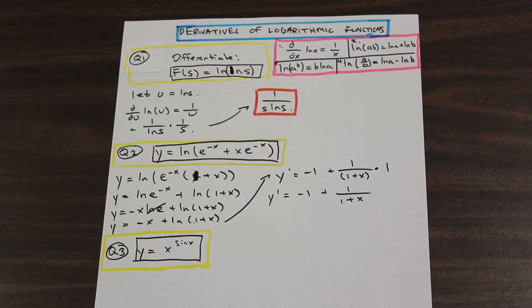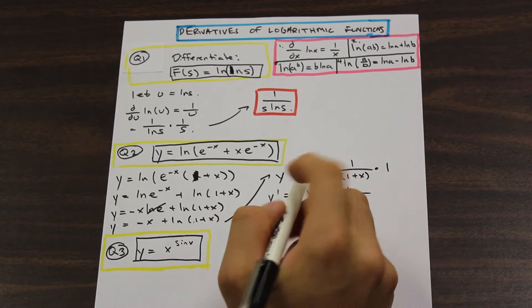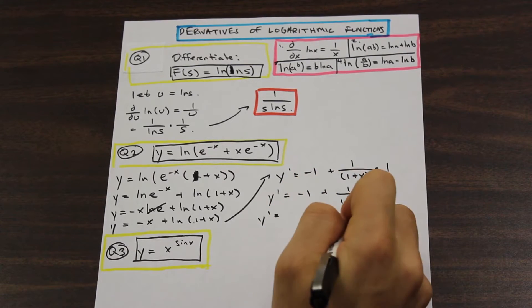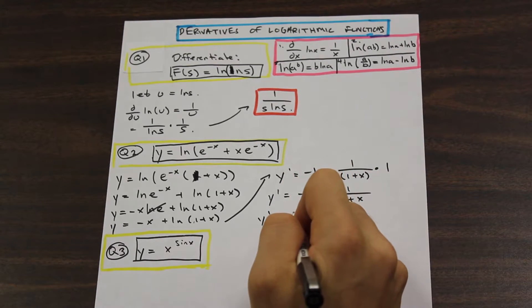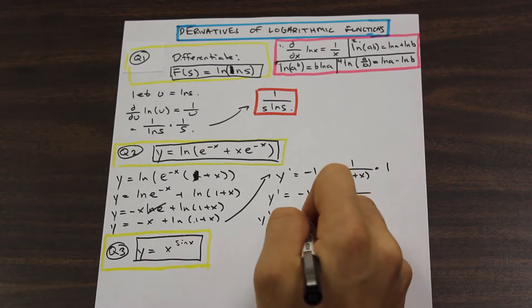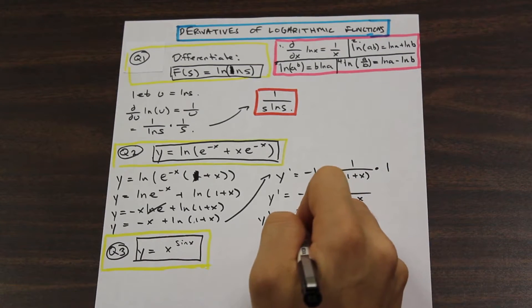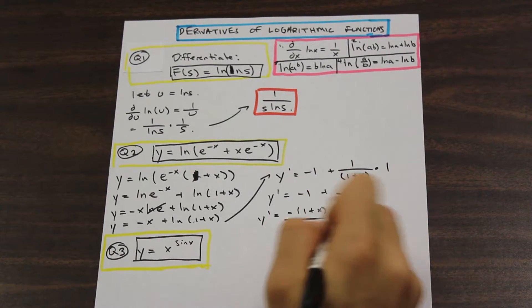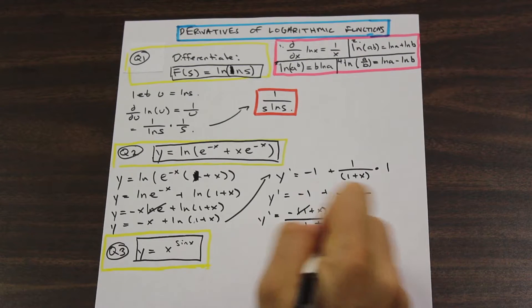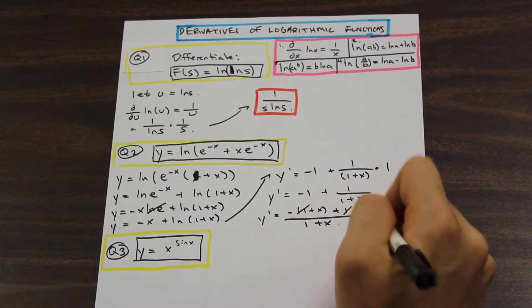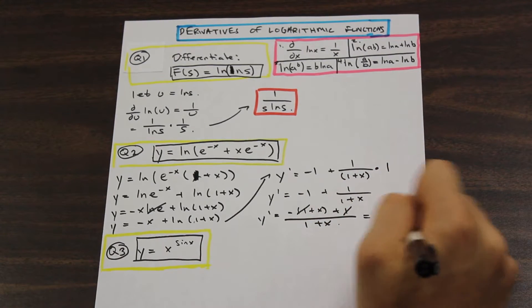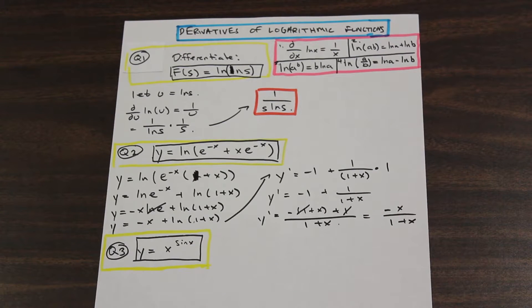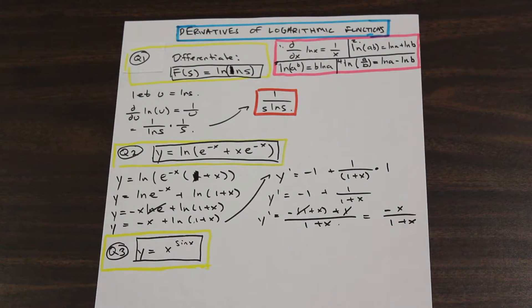So we are left with negative 1 plus 1 over 1 plus x. Perfect. And can we clean that up in any way? Well, we could. We could perhaps common denominator these two. So let's multiply top and bottom here by 1 plus x. And we should be left with, because as we can see, this 1 and this 1 are going to cancel, we should be left with negative x over 1 plus x. And that is the answer to the second question.